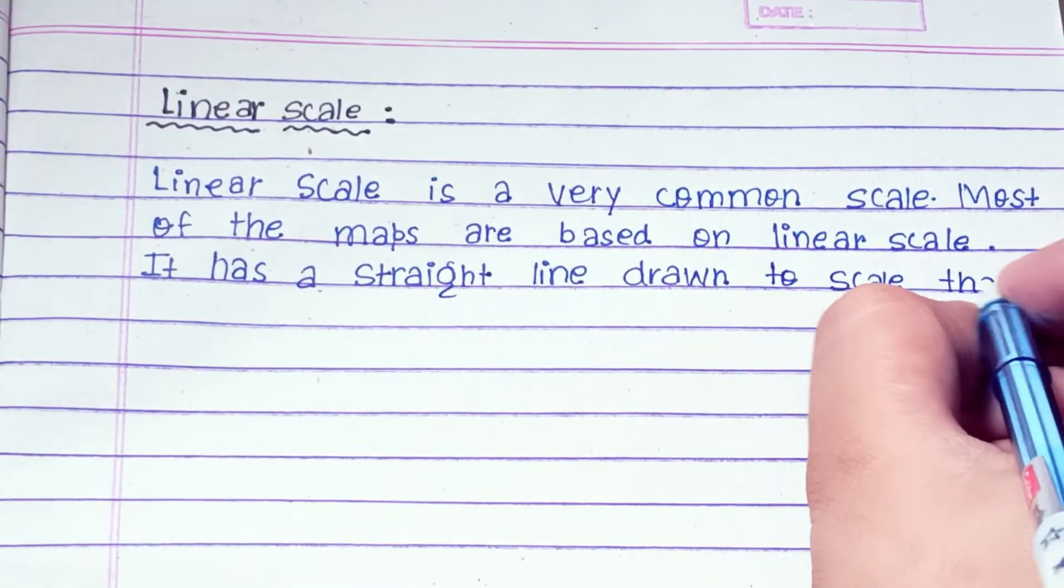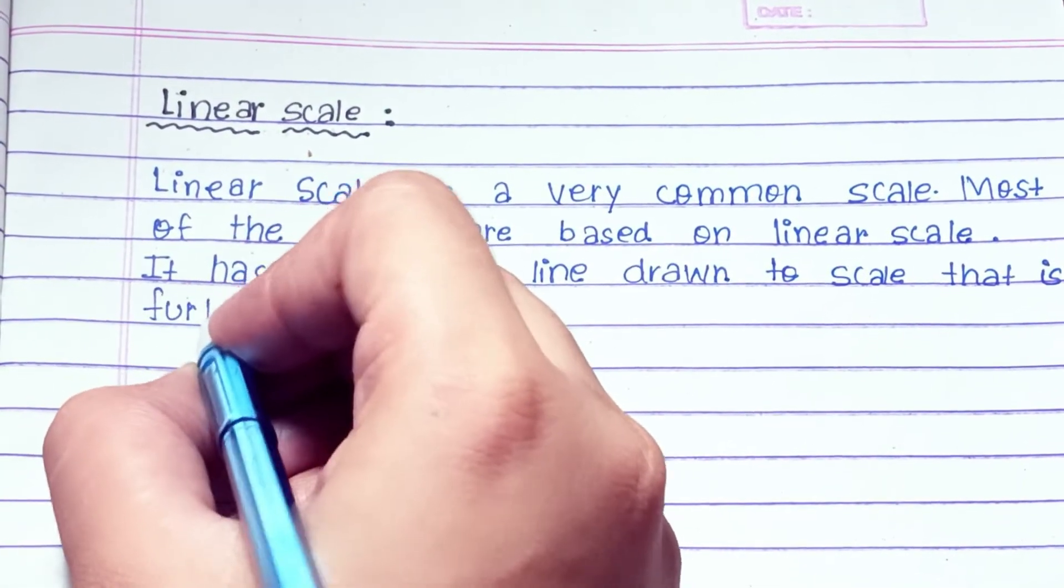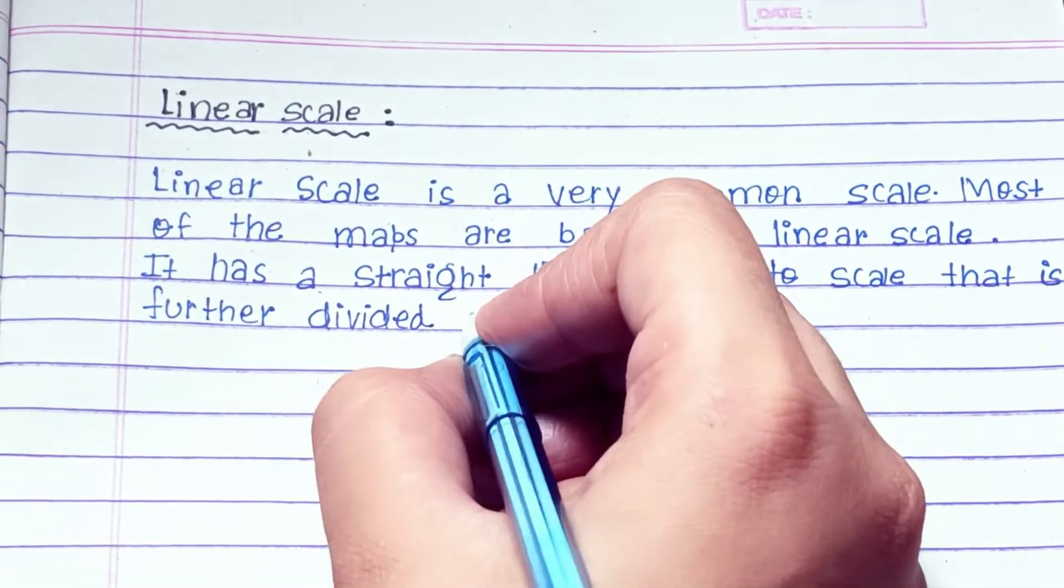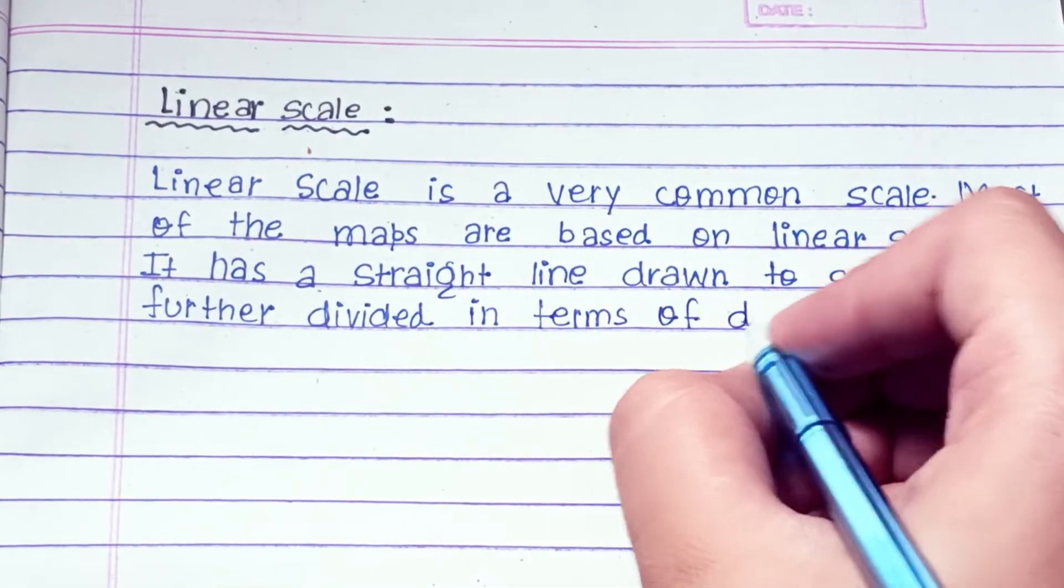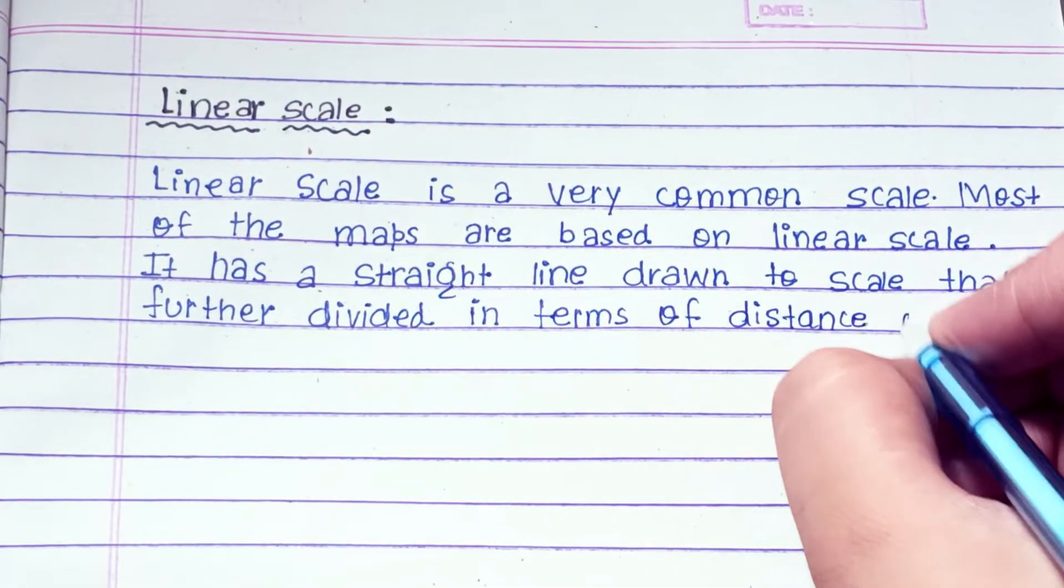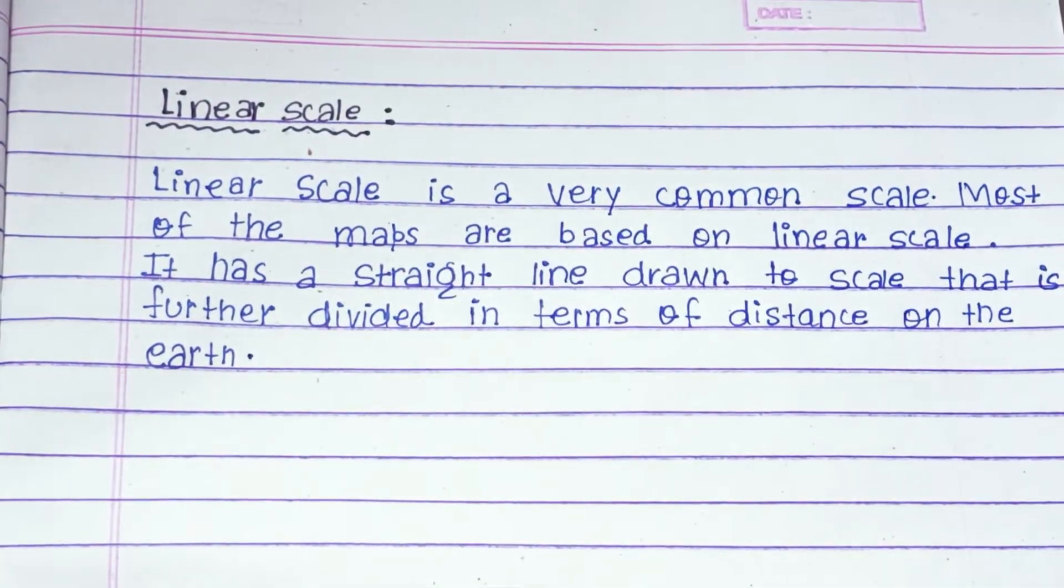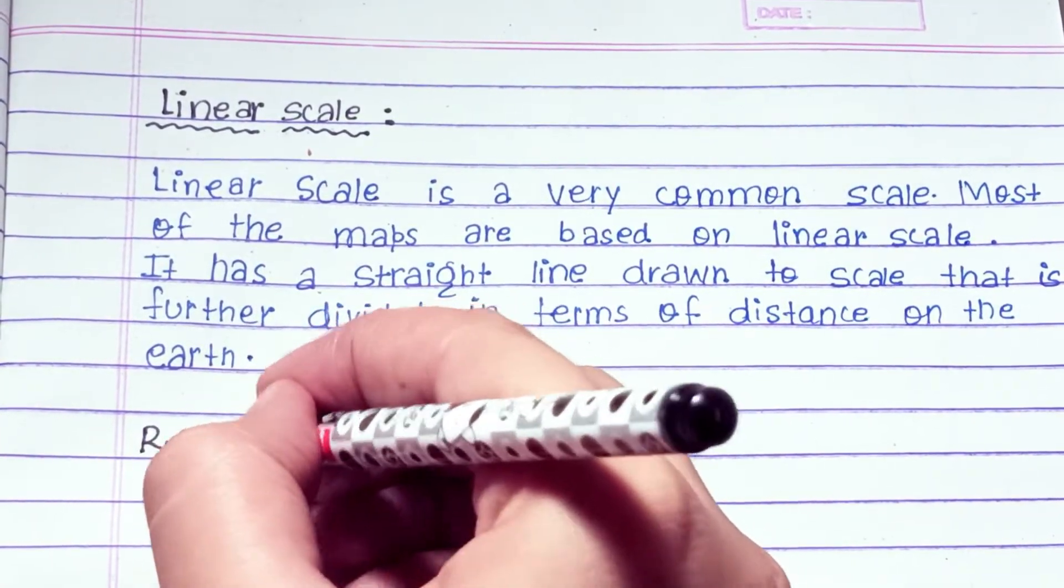Linear scale. Linear scale is very common scale. Most of the maps are based on linear scale. It has a straight line drawn to a scale that is further divided in terms of distances on the earth.